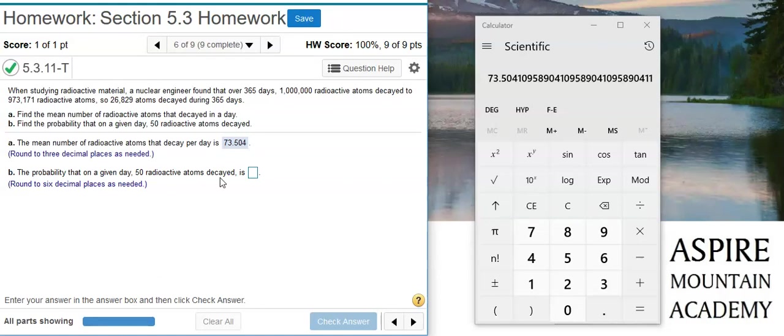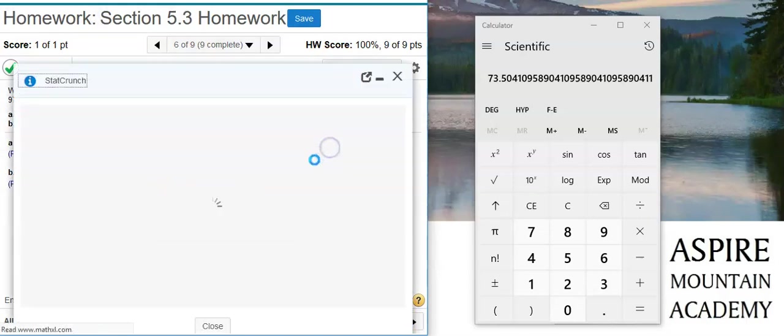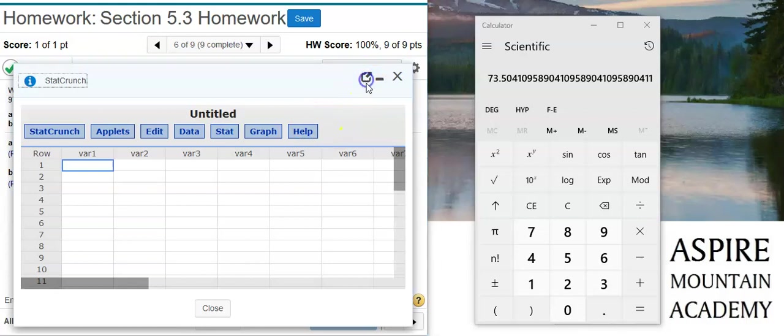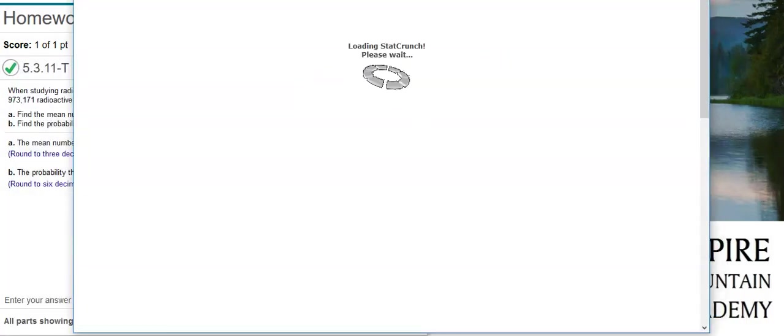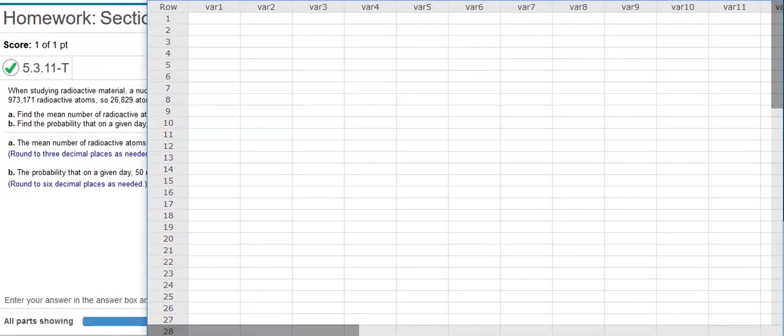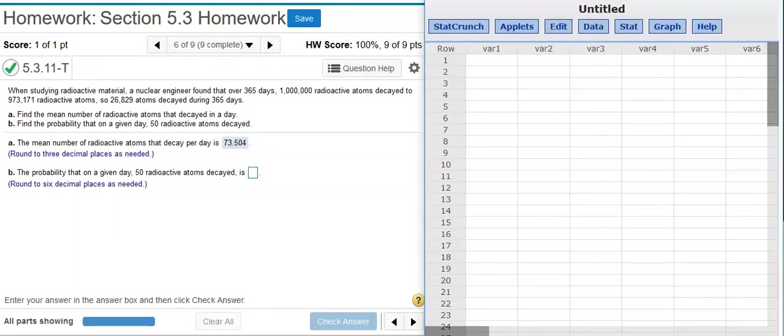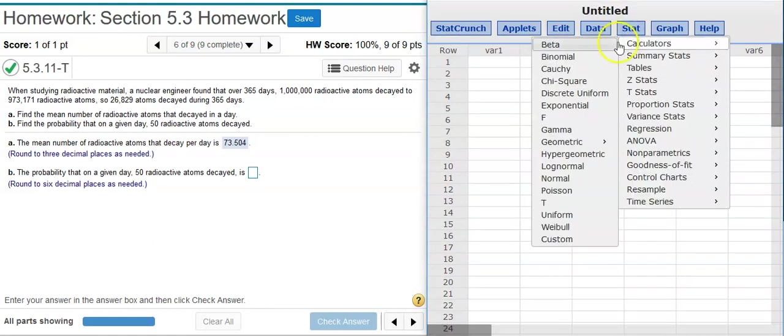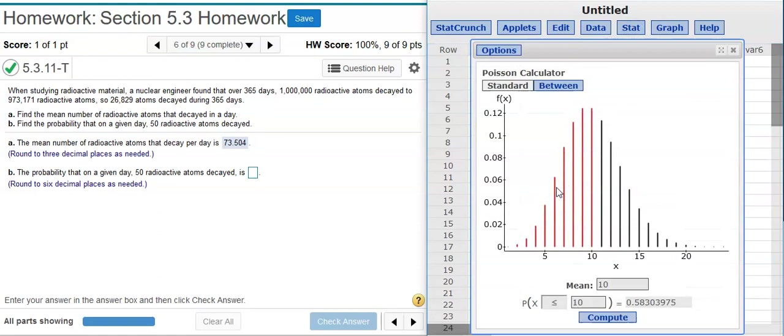Now Part B asks for the probability that on a given day 50 radioactive atoms decayed. To do this, I'm going to open up StatCrunch, and inside StatCrunch I'm going to use the Poisson distribution calculator. Let's pop out StatCrunch here. I'm going to resize this window so we can see everything better. Now here in StatCrunch, I go to Stat > Calculators > Poisson.